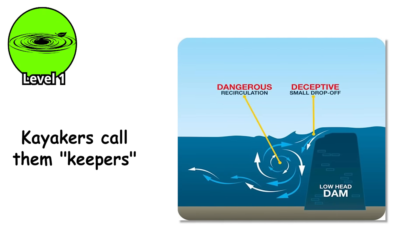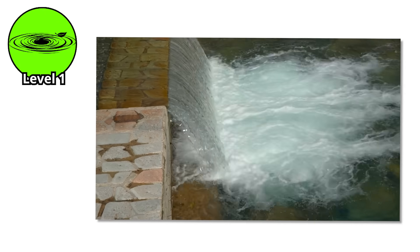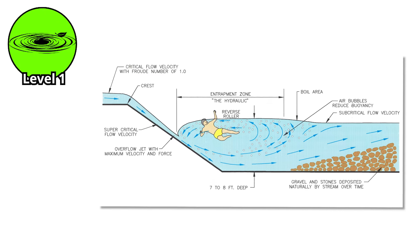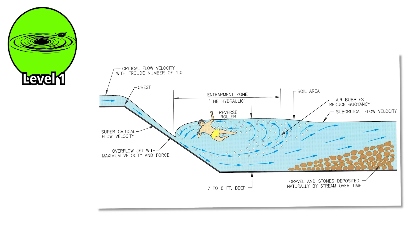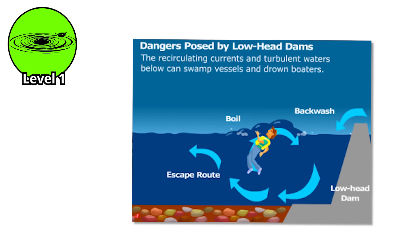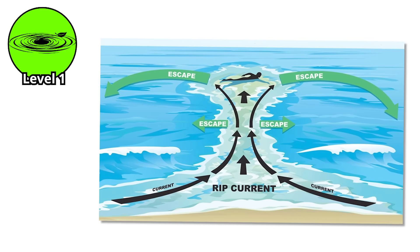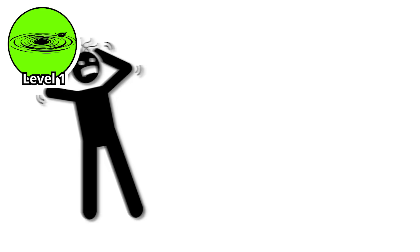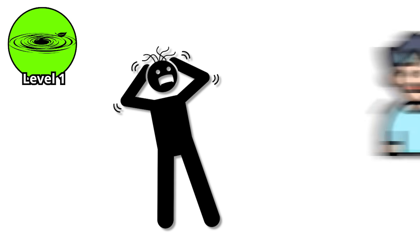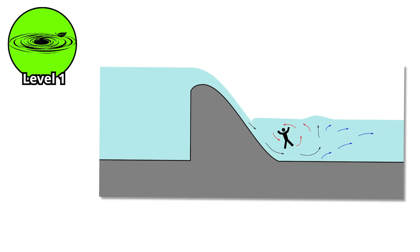Kayakers call them keepers because that's exactly what they do. They keep you. A swimmer caught in a hydraulic will be pulled under, tumbled along the bottom, pushed back up near the dam, then immediately pulled under again, over and over. You can't swim out because both surface and bottom currents work against you. You can't get air because you're underwater half the time. Panic sets in within seconds.